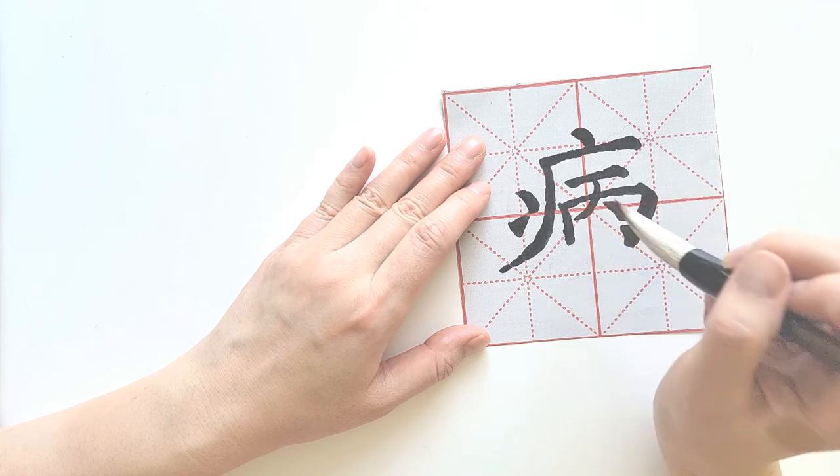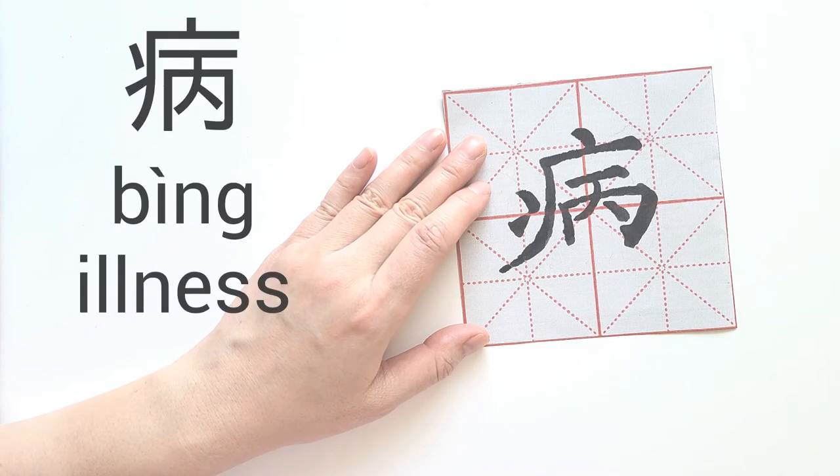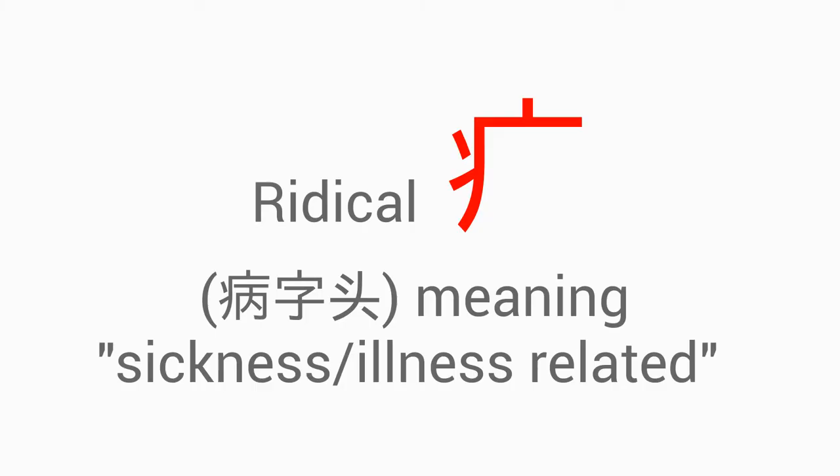We'll also be learning the words associated with illness. Let's take a look at the radical, or what I call the prefix of illness. When you see this symbol, 病字頭, think immediately — it's sickness or illness related.